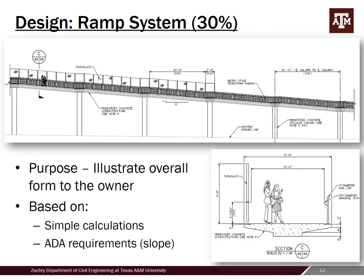For the ramp, at 30% we were just laying it out for the owner using rules of thumb for general sizing. We went with a simple reinforced concrete design — you can see the cross section we went with, which was pretty clean and aesthetically nice. You'll notice the stair-step slope — the 1 to 12 as mentioned is for ADA requirements. ADA also requires a 5-foot landing for rest areas as people go up this relatively long ramp. The span center-to-center of piers was 35 feet, and we stayed pretty close to this layout even through the final design.